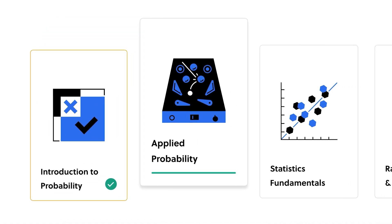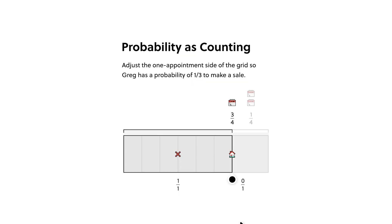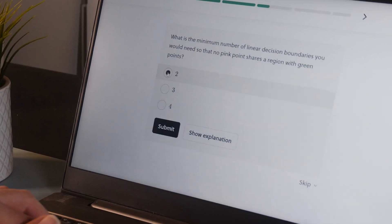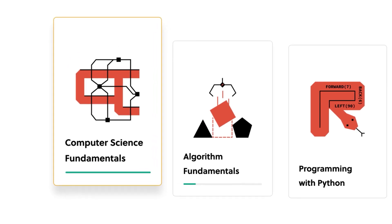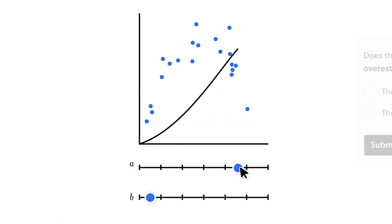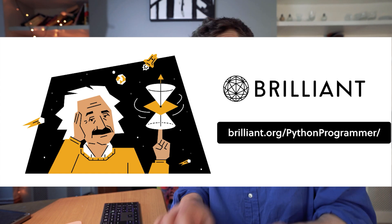Now let me tell you about Brilliant, the sponsor of this video. Brilliant is a STEM learning platform that excels at interactive, hands-on learning. A lot of big tech companies recommend it to sharpen up your maths and stats in preparation for data science interviews. It's about applying knowledge, solving problems, and developing logical thinking skills. Brilliant offers thousands of lessons from time-tested subjects like math and Python to cutting-edge topics like neural networks and quantum computing. Get started free for 30 days at brilliant.org/PythonProgrammer — the first 200 to use that link get 20% off the annual subscription.